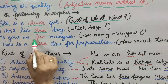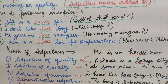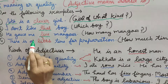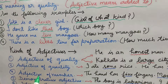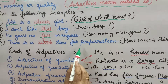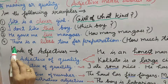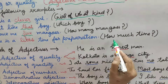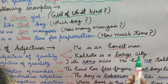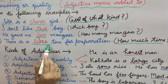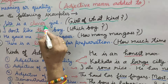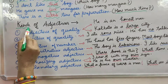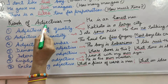'He gave me five mangoes.' How many mangoes? Five. It means we are counting something, so we are using the adjective of number. 'There is a little time for preparation.' How much time is there? Little. So these words are showing that they are adjectives.